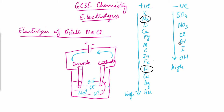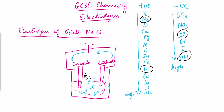For the negative ions, hydroxide ion has higher priority than chloride ion. So the hydroxide ion will go to the anode and the chloride ion will remain in the solution. This order of priority is the crucial step you have to remember in electrolysis.